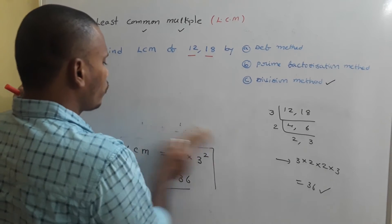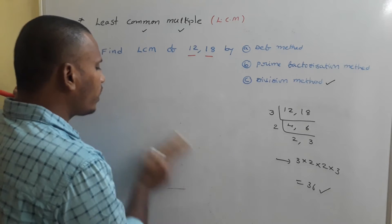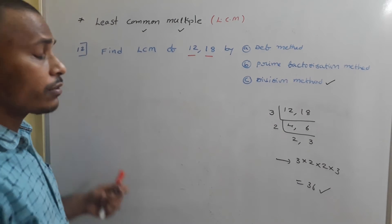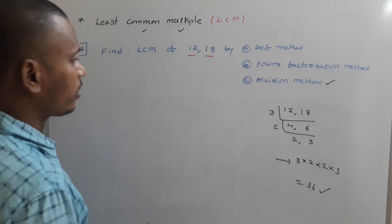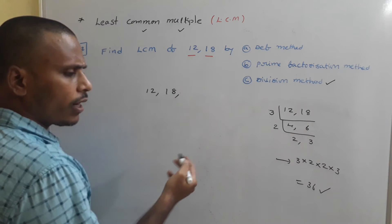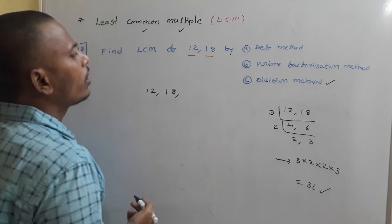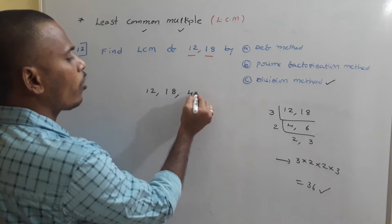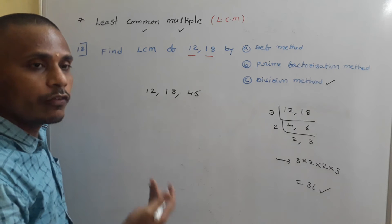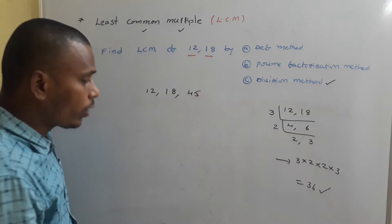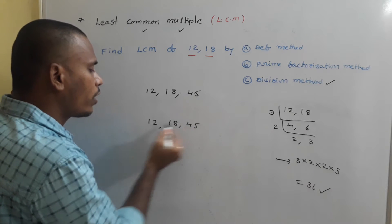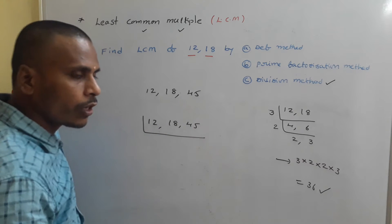Usually to find LCM we follow this shortcut method. Suppose we have 12, 18, and 45 — what is the LCM of these three numbers? Using the shortcut method with 12, 18, 45: start with 3. 3 divides 12 to give 4, 3 divides 18 to give 6, and 3 divides 45 to give 15.